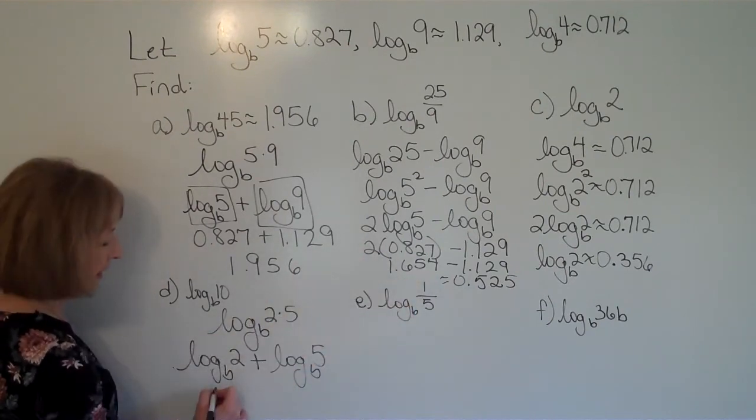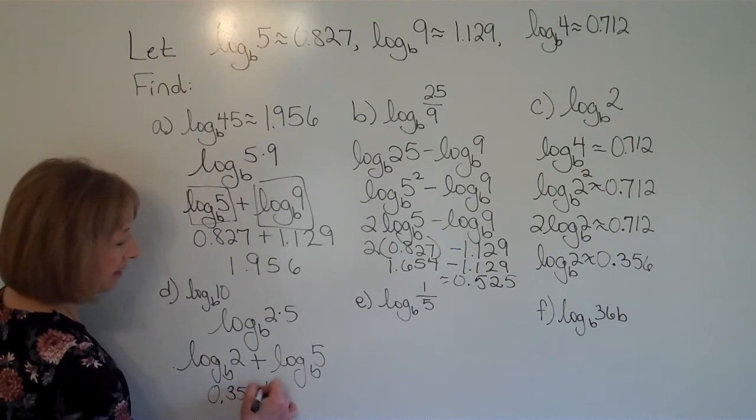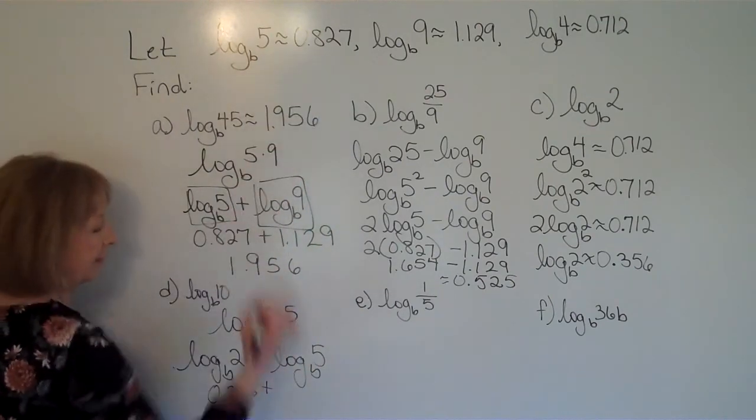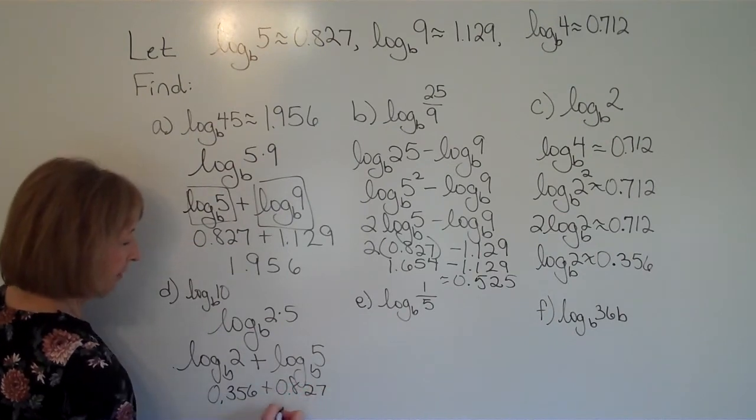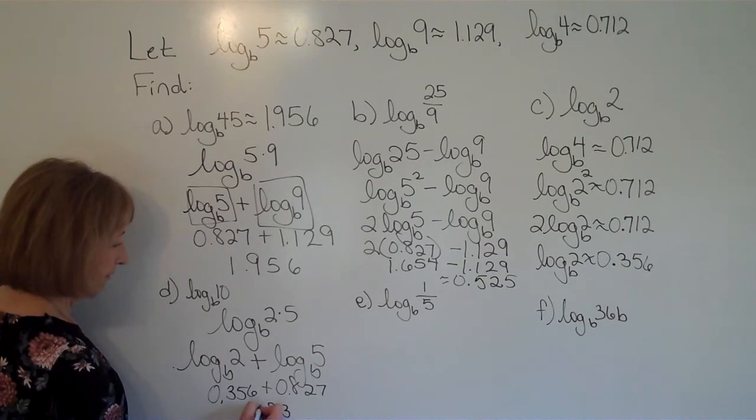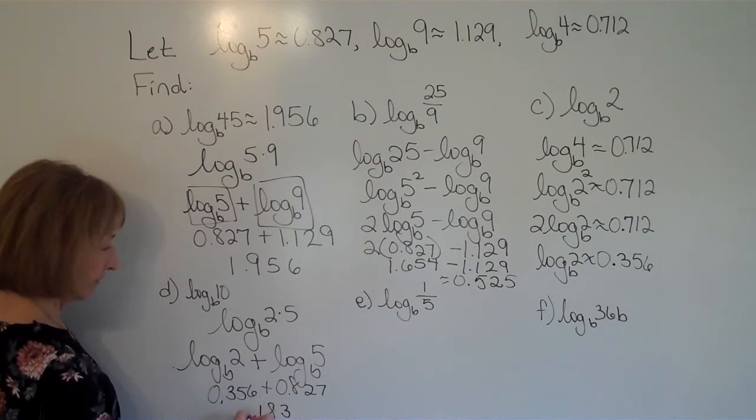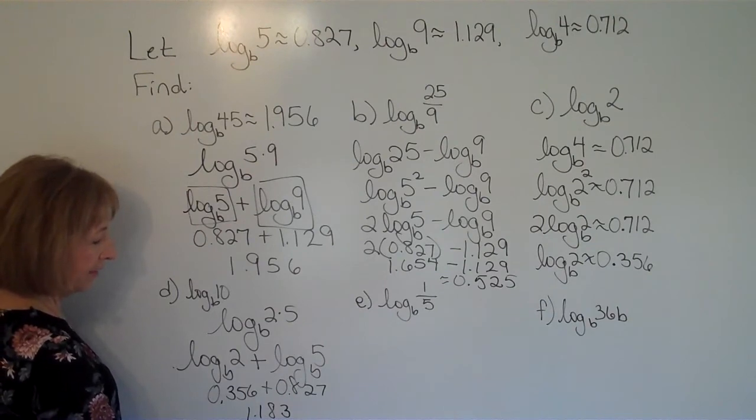Log base b of 2 is approximately 0.356. Log base b of 5 is approximately 0.827. So I get about 1.183.